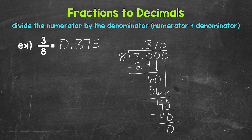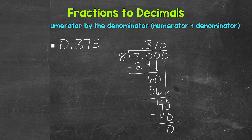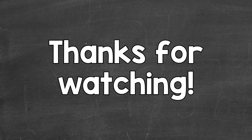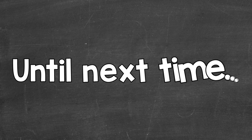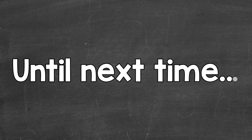So let's write this over here: 3 eighths equals 0.375 — 375 thousandths. So there you have it — that's how to convert 3 eighths to a decimal. I hope that helped. Thanks so much for watching. Until next time.